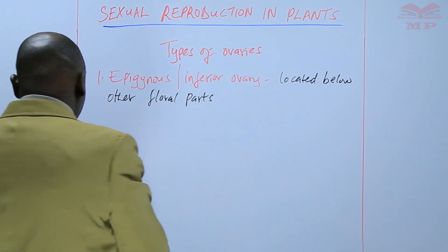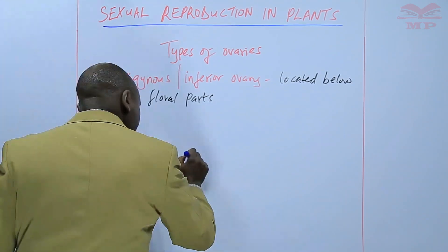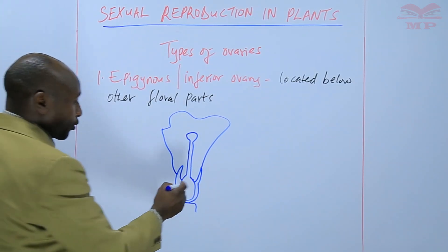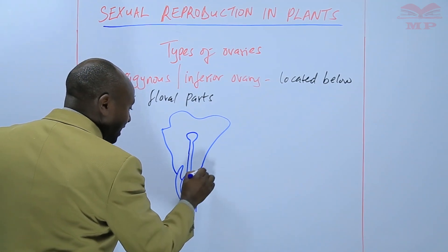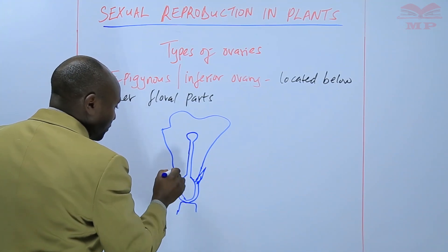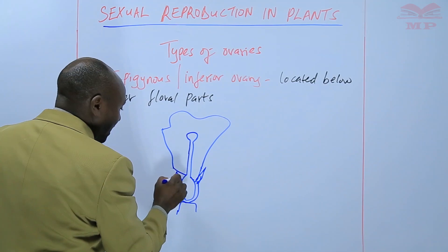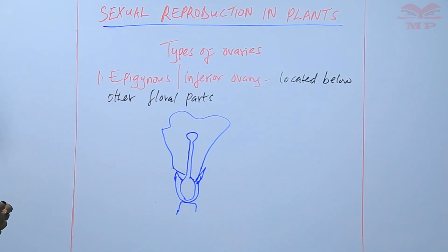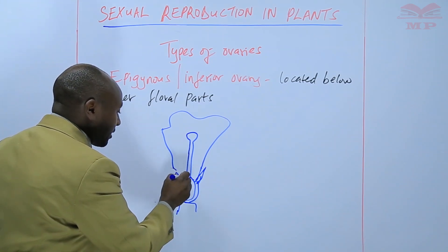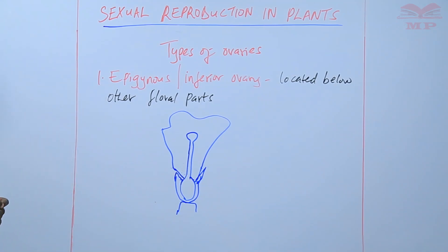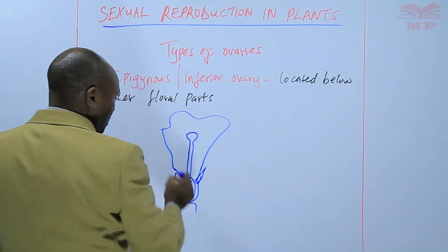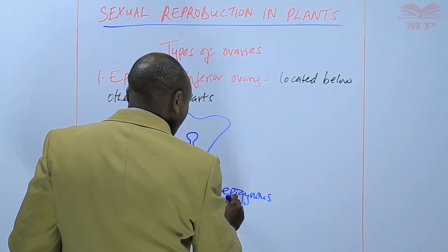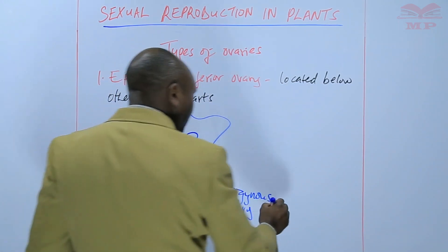You can have an illustration of the same — a diagram. This is an epigynous ovary because you can find that the other floral parts, such as the sepals, are at a higher position. The petals also are at a higher position than the ovary. So this ovary is said to be inferior, located at a position below the other floral parts. This epigynous ovary is commonly found in flowers such as the apple.